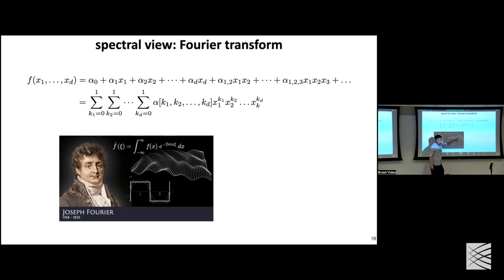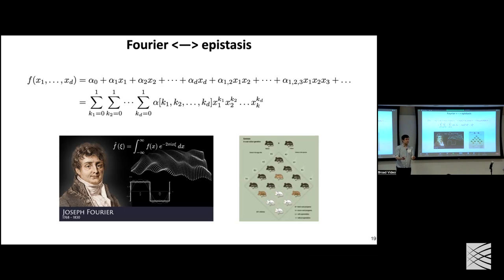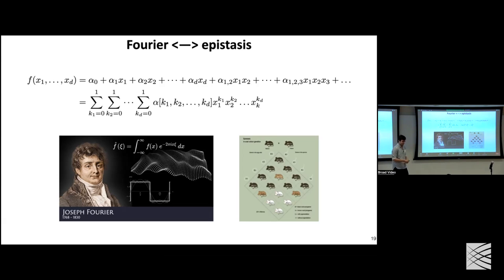There's also an interesting connection between the Fourier transform of f and a core concept in statistical genetics called epistasis. Epistasis tells us how much non-linearity is going on between two mutations. If I have a protein and I mutate location 1 and location 2, and look at the functional output, if these two mutations interact linearly there is no epistatic interaction — all coefficients of x_1·x_2 and above are zero.